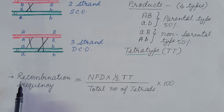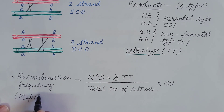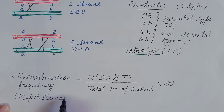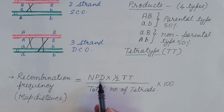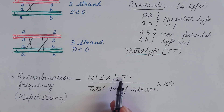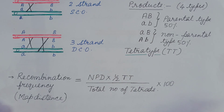In order to determine the recombination frequency or map distance, we use this formula: recombination frequency = (NPD + 1/2 TT) / total number of tetrads × 100.